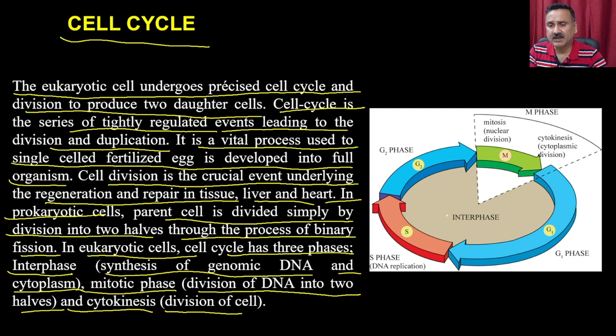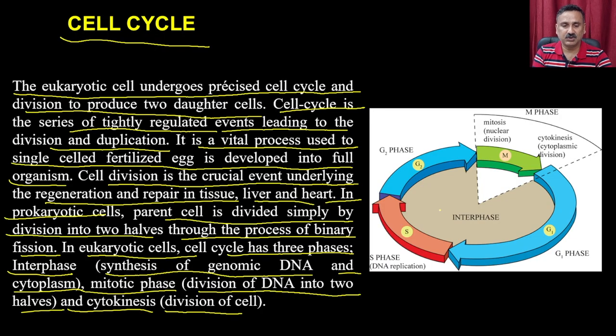In a cell cycle, the interphase prepares the cell for division. It includes the S phase, where DNA synthesis occurs, and the G1 and G2 phases. This is followed by the mitotic phase, which divides the DNA into daughter cells, and then cytokinesis, which divides the cell into two.